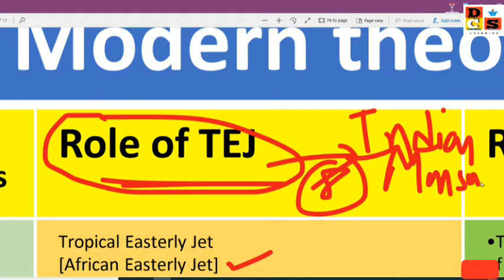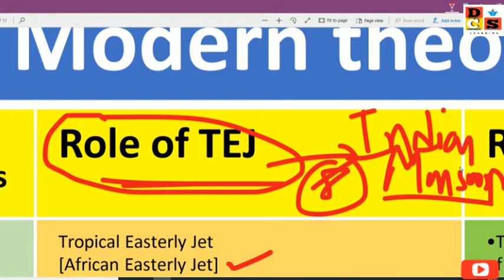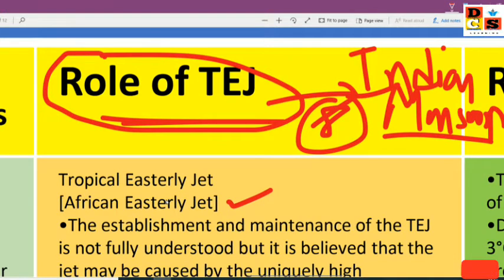In this series, we have covered many classical theories and modern theories about the Indian Monsoon, concepts of the Southwest Monsoon and Northeast Monsoon, and how many factors are responsible. In this video, we will focus specifically on the Tropical Easterly Jet, also called the African Easterly Jet, and its impact. So let's start.